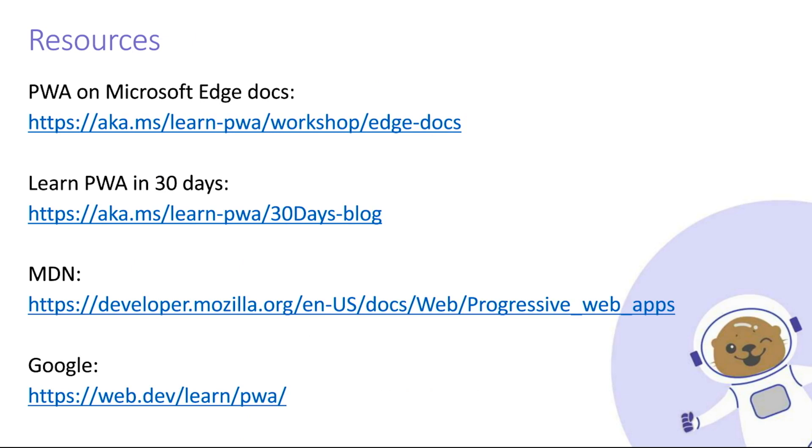So we've talked about three different things today: app management, OS theming, and window controls overlay — which is apparently Diego's favorite. Hopefully you can go out and implement those in your own progressive web apps. Here are some resources you can check out for more information. In the next video, we're going to talk about further integrations with your operating system. Stay tuned.